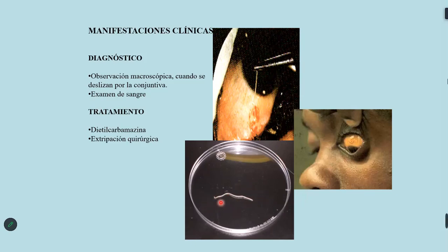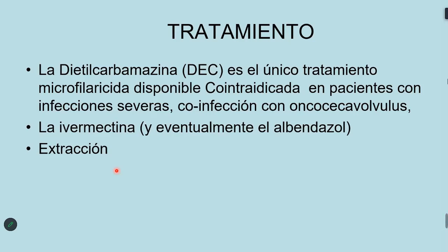Se puede extraer el gusano adulto de la esclerótica mediante una pequeña incisión. Esta enfermedad se acompaña de escozor cutáneo, eritema, fiebre, sensaciones de sensibilidad alteradas, urticaria e hiperoeosinofilia en sangre. El tratamiento es la dietilcarbamazina — la DEC —, el único tratamiento que mata las microfilarias disponible; no se recomienda en pacientes con infecciones severas por Onchocerca volvulus. También se puede utilizar ivermectina o albendazol y la extracción de las filarias adultas.